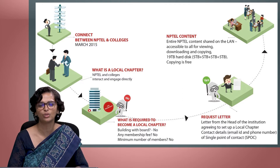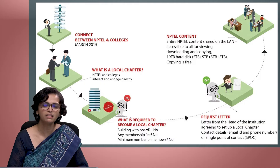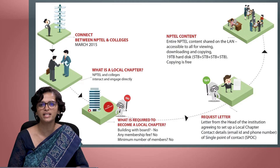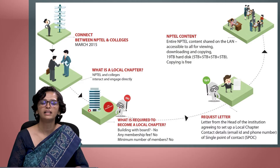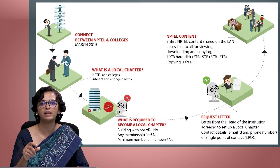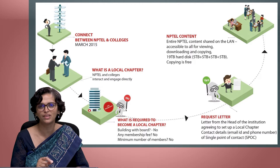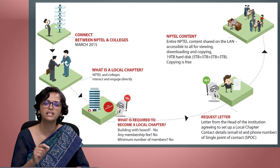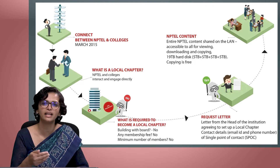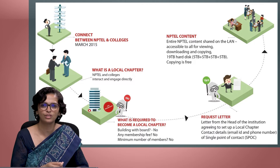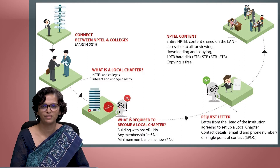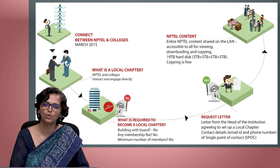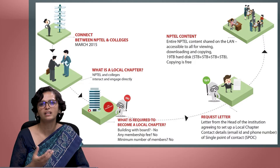What we require from the local chapter or the college is a letter on the letterhead of the head of the institution, stating that they want to establish a local chapter in their college. They also provide details of the person who will be our single point of contact, or SPOC — including name, department, email ID, and mobile number of the person acting as SPOC. Once the head of the institution signs this letter and shares it with us, everybody under that local chapter in the college comes as part of this partnership.